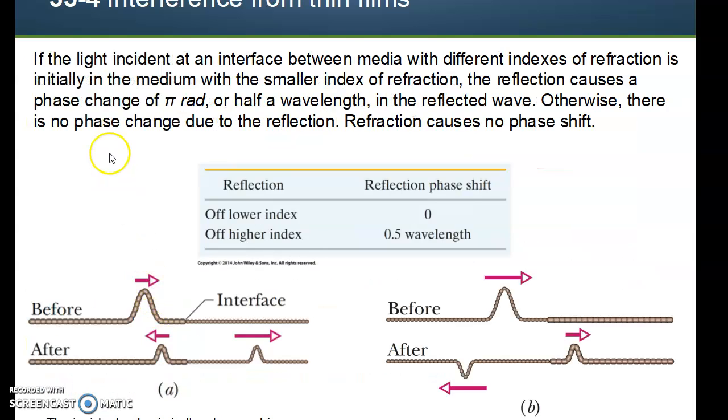If the light incident on the interface between media with different indices of refraction is initially in the medium with a smaller index of refraction, reflection causes the phase change of pi radians, or half a wavelength, in the reflected wave. Otherwise, there's no phase change to the reflection. Refraction causes no phase shift. So, reflection off the lower indices, you have zero. Off the higher indices, 0.5 wavelengths. And this right here just gives you an idea of how that all shakes out there.